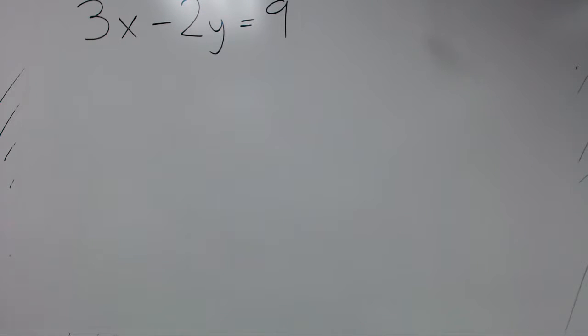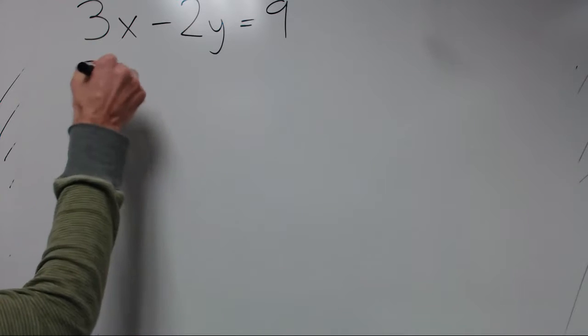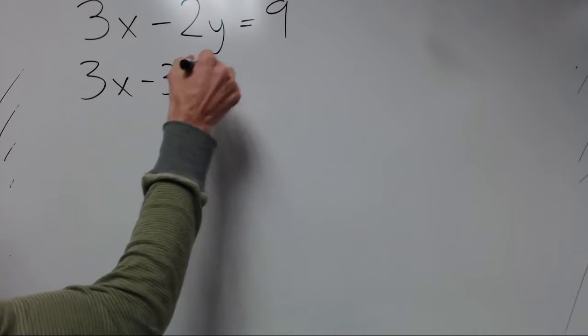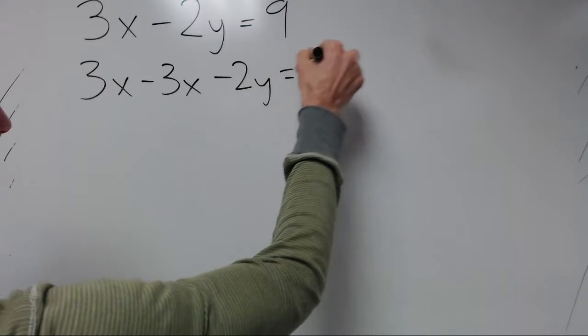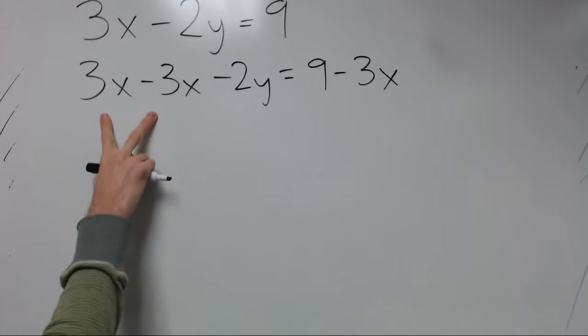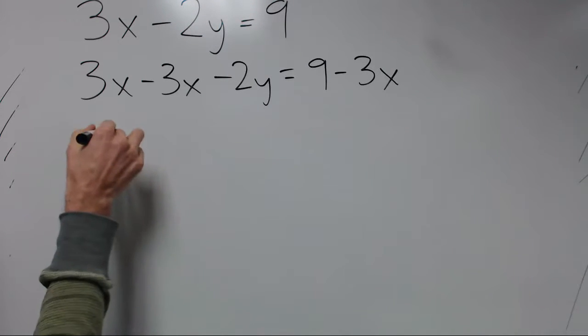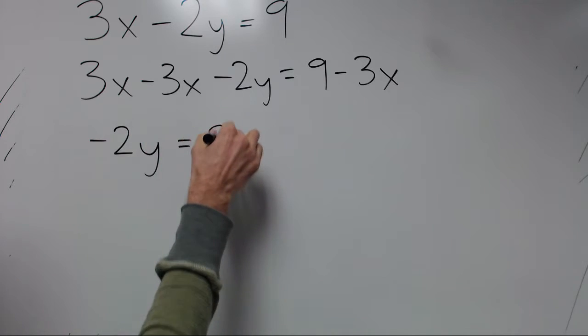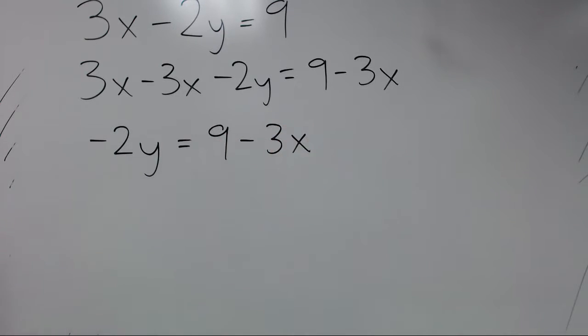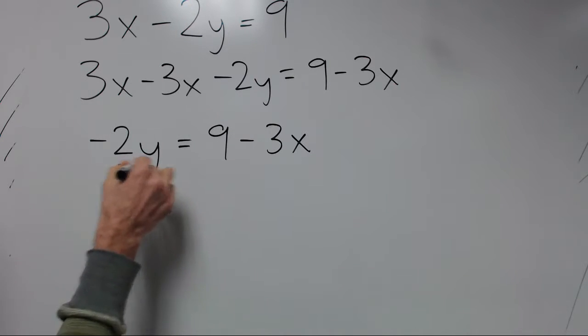So what we'll do is just subtract the 3x from both sides. And of course 3x minus 3x goes to 0.